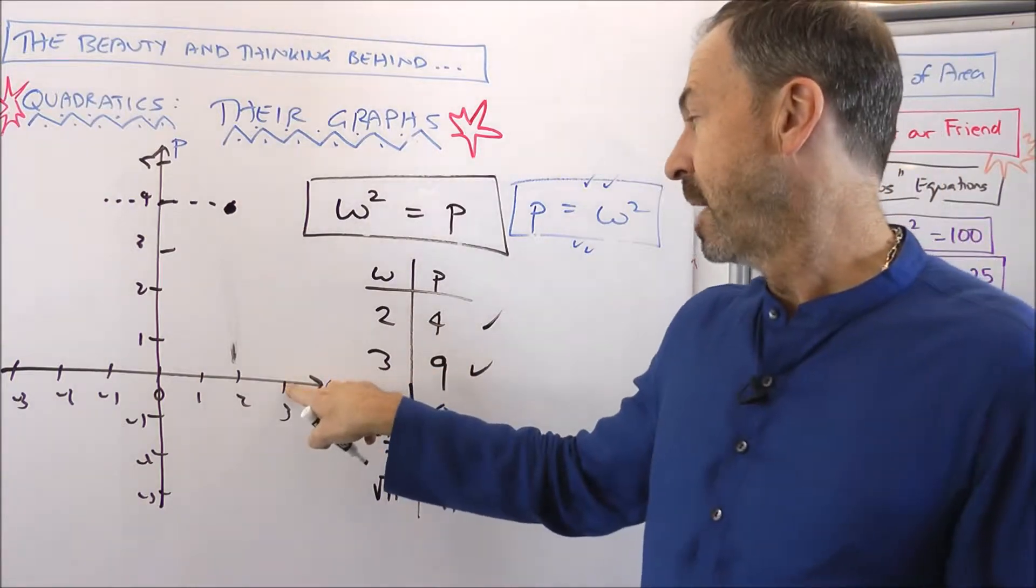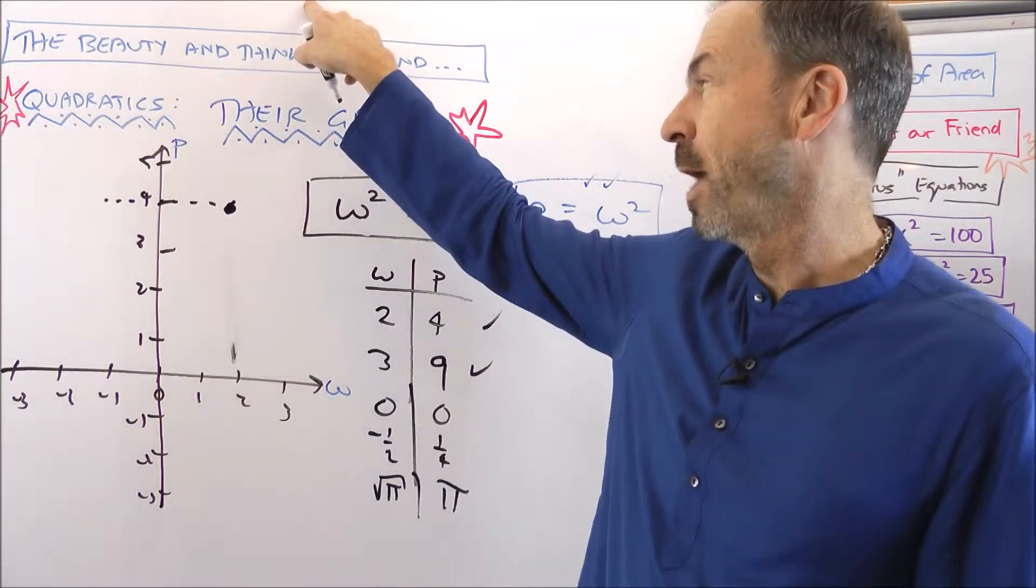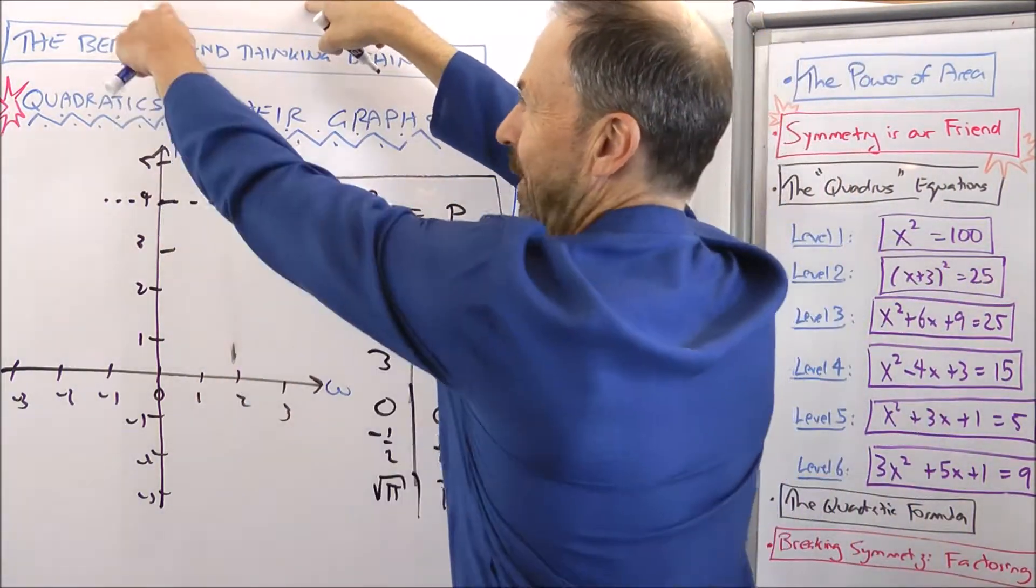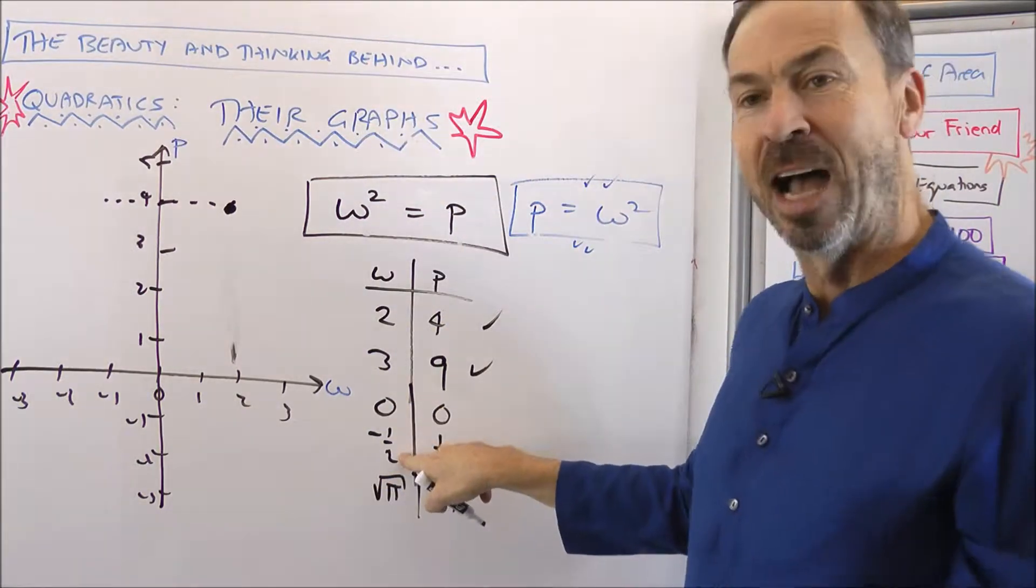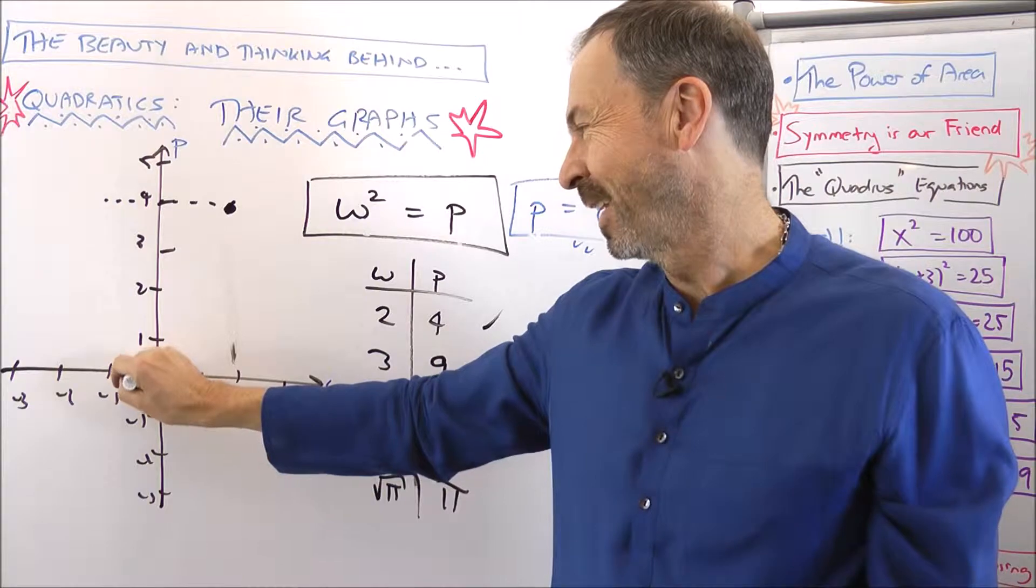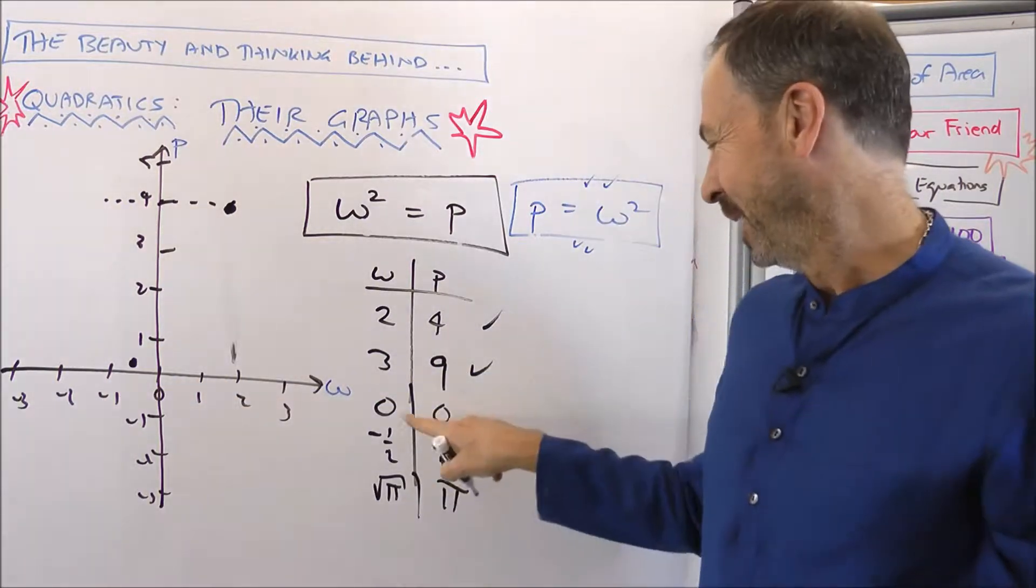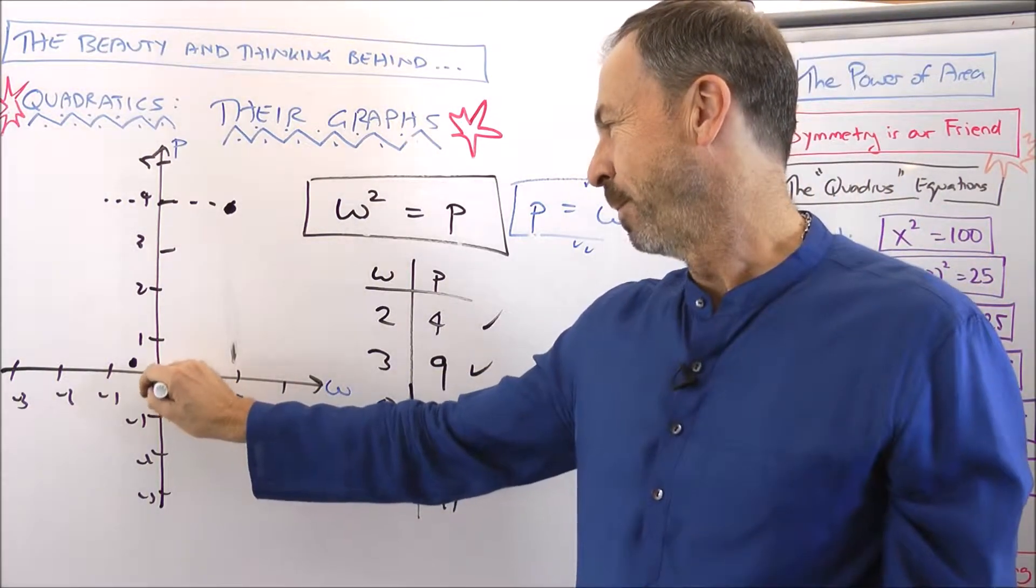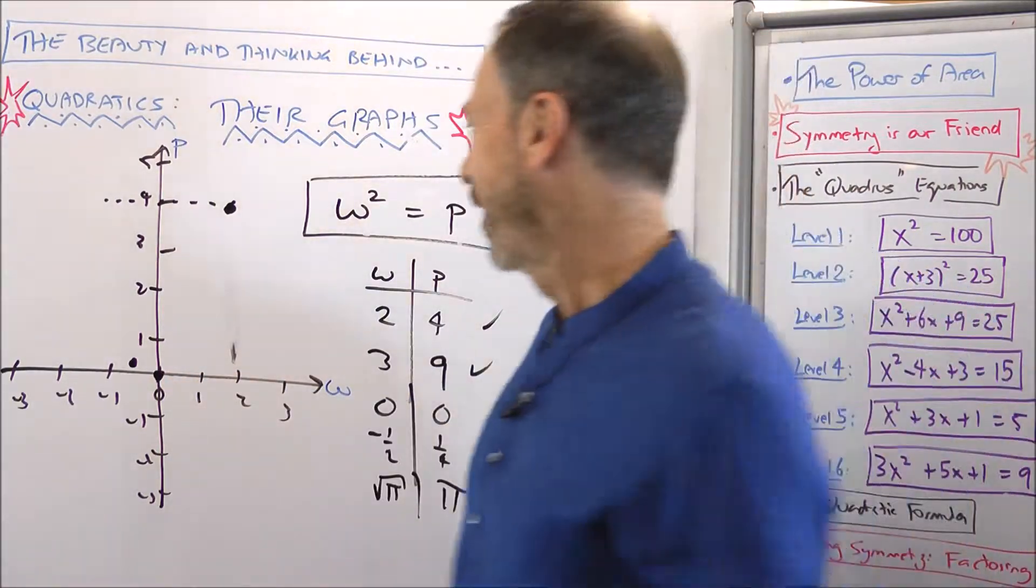This data point 3, 9 would be 9 high, way up here. W is 3, P is 9. Negative half and a quarter: negative half for W, a quarter for P. That's about that data point. 0, 0: 0 for W and go up 0 high, 0 for P.